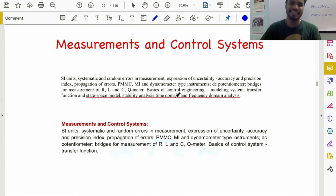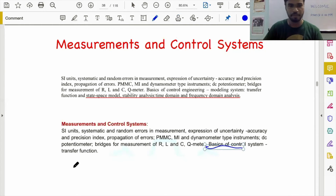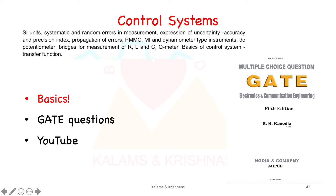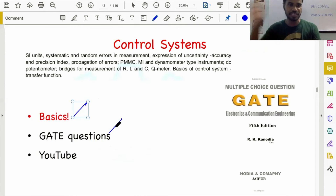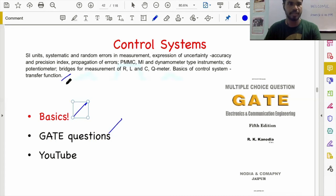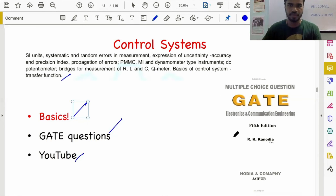Measurements and control systems — again, two very well-known subjects. Gate papers are there for measurements. Control systems has been made very, very simple in the syllabus, so know the basics, essentially the transfer function. We look at the basics of control systems — only basics are there. GATE questions are available; make sure you pick the basic questions. Don't get into non-unity steady-state error topics like those that showed up in ECE GATE — that's not a basic topic. Transfer function might show up, as it did in diagnostic one. There are a lot of YouTube videos, and I have made a collection of basic control system videos. Examples are there in Kanodia.